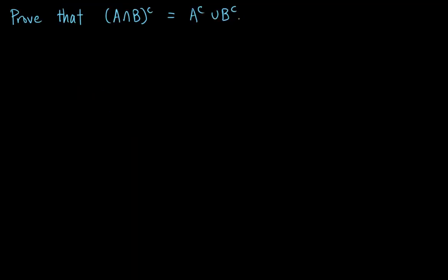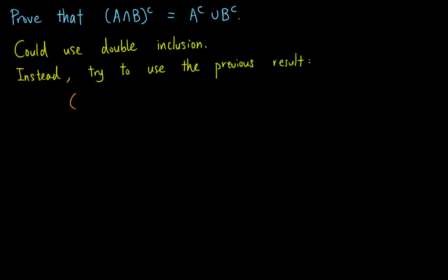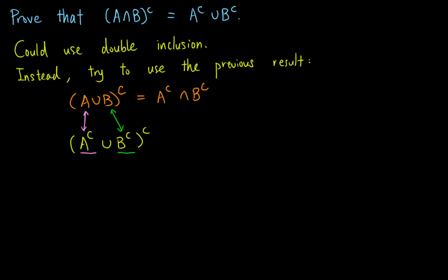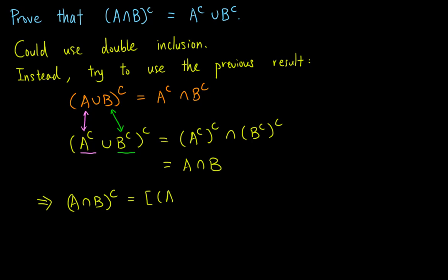For completeness, we also prove the other De Morgan's law. While double inclusion also works, we try to prove it using the previous result, which states that the complement of A union B equals A complement intersect B complement. It gives an expression for the complement of a union, so we consider the complement of the union on the right-hand side of our wanted result, and replace A by A complement and B by B complement. We obtain A complement complement intersect B complement complement, which simplifies to A intersect B. This means that the complement of A intersect B equals the complement of the complement of A complement union B complement, which is just equal to A complement union B complement.